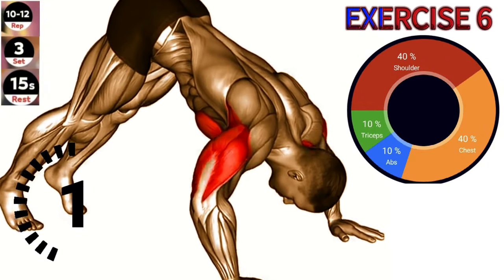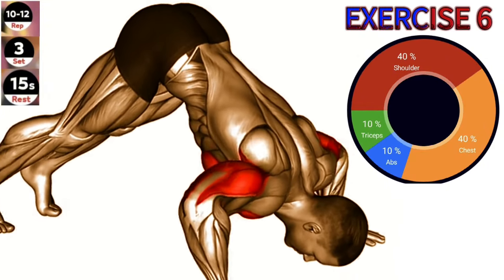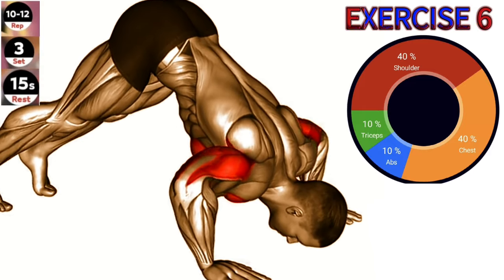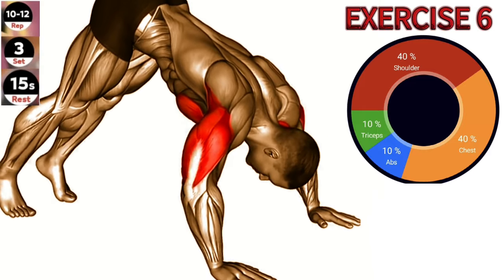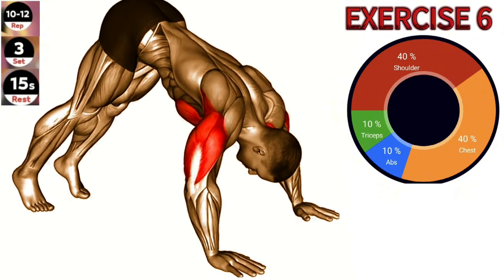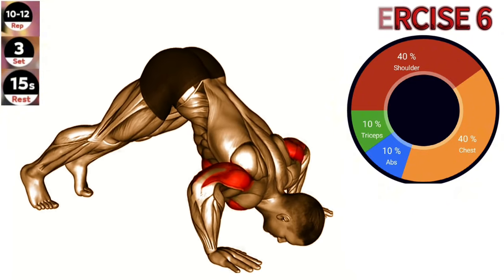Exercise 6. Pike Push-Up. Engage your core and maintain a straight line from your head to your heels throughout the exercise. Focus on keeping your elbows close to your body as you lower yourself down. Start in a push-up position with your hands shoulder width apart and your feet hip-width apart.